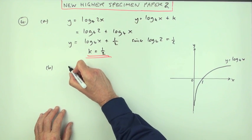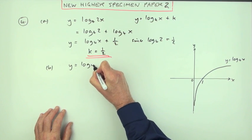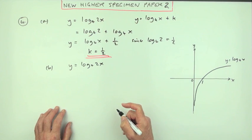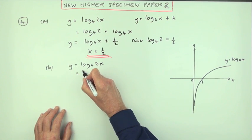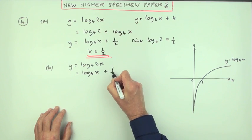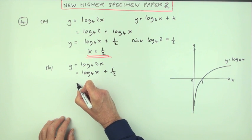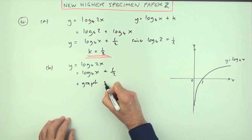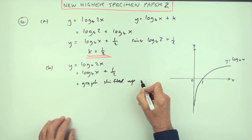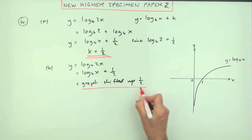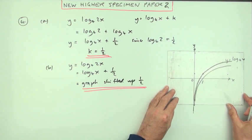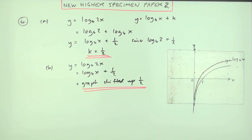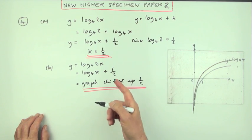You could have y equals log base 4 of 2x. Since it equals this, using the hence part, it equals log base 4 of x plus a half. The interpretation is that the graph shifted up by a half. If that was to move up half a unit, it would end up looking like this.